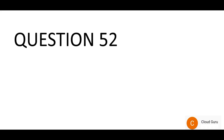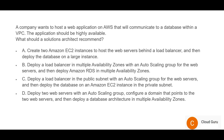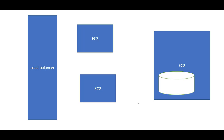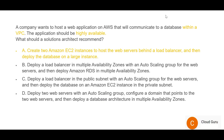Let's move to Question 52. The keywords here are: AWS will communicate to a database within the VPC, and the application should be highly available. VPC and high availability are the key terms. Option A suggests two EC2 instances behind a load balancer with the database on a large EC2 instance. This option doesn't address anything about VPC — Virtual Private Cloud — so it is wrong.